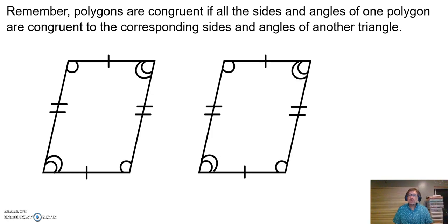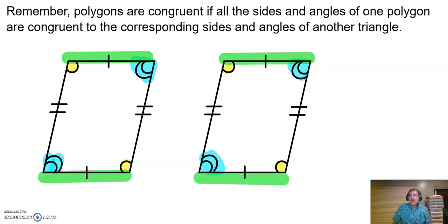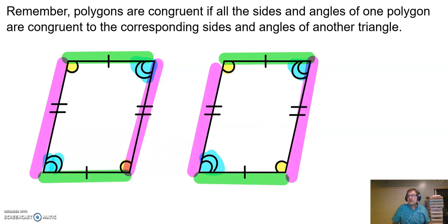So remember, when we talk about congruence and congruent polygons, polygons are congruent if all the corresponding sides and corresponding angles of one polygon are congruent to another polygon. Looking at these two polygons, opposite angles in both of them are congruent to each other. The two ticks are congruent to the two ticks, so all the angles on the left are congruent to all the angles on the right. Top and bottom are congruent to top and bottom, and the left side is congruent to the right side. So to say polygons are congruent, I need all the sides and all the angles to be marked congruent.